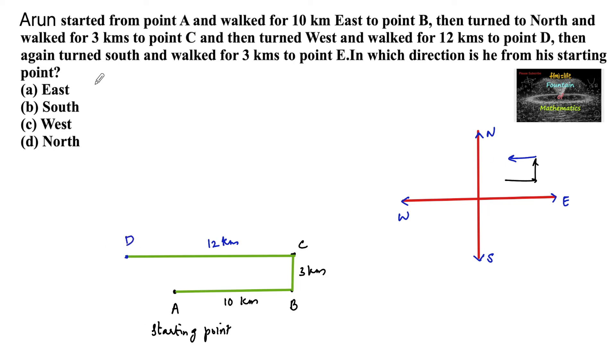And then now, again turned south. So at this position, again he turned towards the south. South means down, means he is taking a left turning. How long? Walked for 3 km. 3 km means exactly parallel to BC. Same as BC length, 3 km.